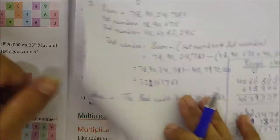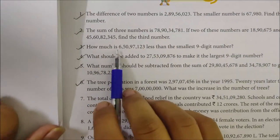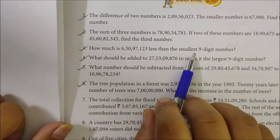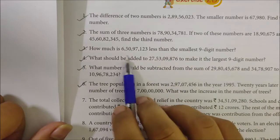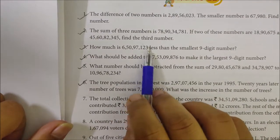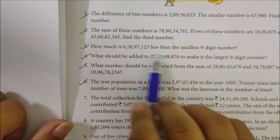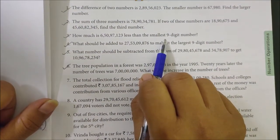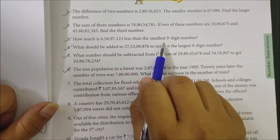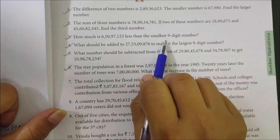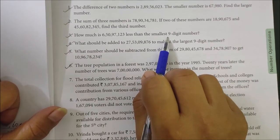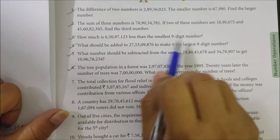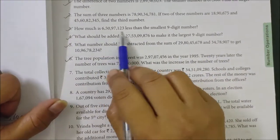Question number 3: How much is 6,50,97,123 less than the smallest 9-digit number? First, find the smallest 9-digit number. The smallest digit is zero, but we start with 1, then eight zeros: 10,00,00,000. This is the smallest 9-digit number. Now minus the given number and you will get the answer.